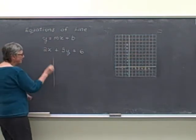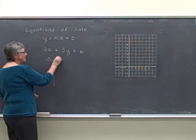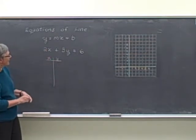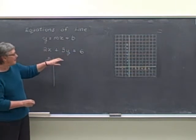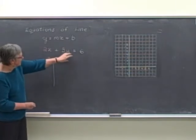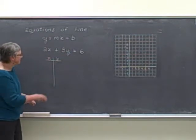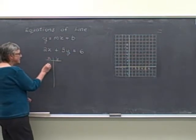If we first try to find a table here and we try to do what we did before by choosing the x values and finding y, it gets a little bit complicated because the equation hasn't been solved for y. But there's some easy numbers that we can use. For example, if I let x equal 0...